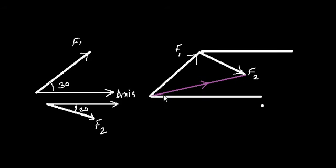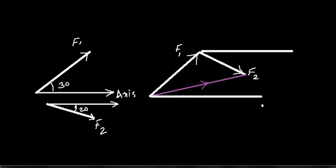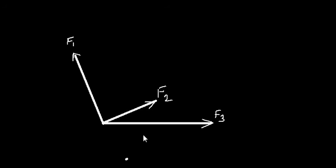Measure the length of the resultant to get its magnitude, and measure the angle it makes with the x-axis to get its direction. This works for two vectors, but if you have more than two vectors — three or four — you can successively apply the parallelogram law to find the net resultant force.